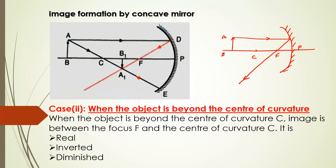The second convenient ray I am going to take is the ray passing through the center of curvature, so it retraces the path and goes back in the same direction. This is your incident ray and this is your reflected ray. These two reflected rays are intersecting at a point — so this is my image A'B'.